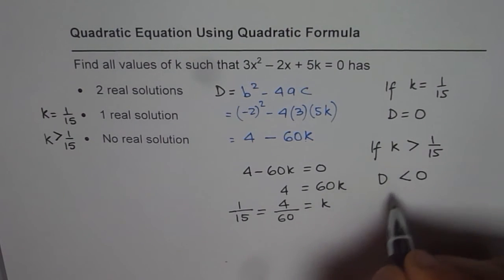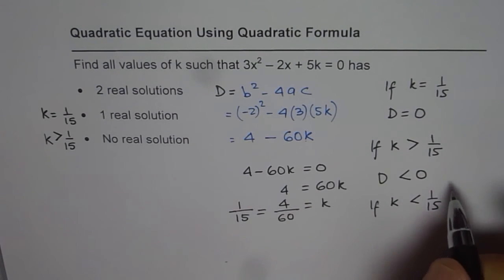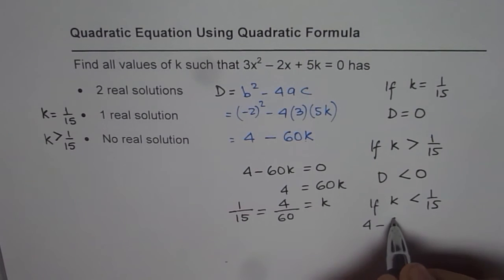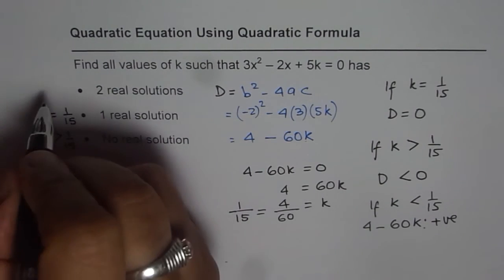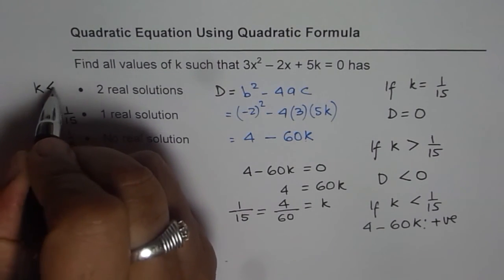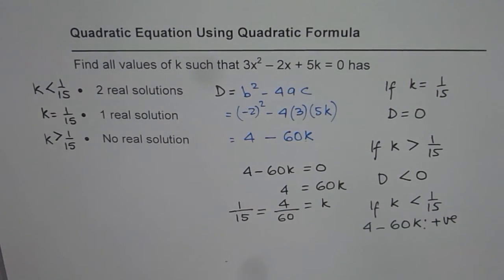And if k < 1/15, in that case, 4 - 60k will be positive. And so we will have more solutions. We will have two real solutions. So for k < 1/15, we will have two real solutions.